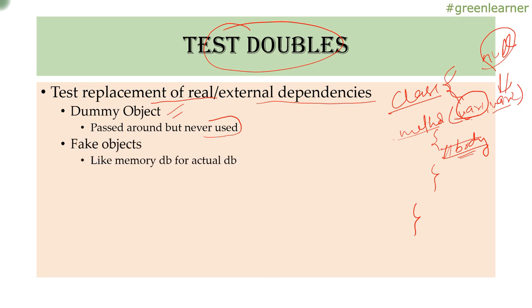The second kind is fake objects. For example, in your application you connect to an actual database, but during unit testing you can fake that DB connection with an H2 in-memory database or an ArrayList. Fake objects replace the actual implementation with a simpler, less complex one that you can easily use in tests.